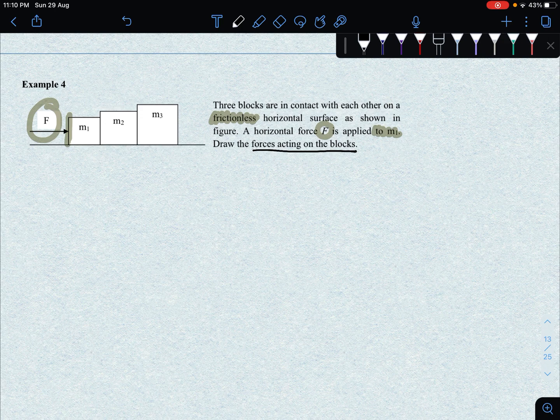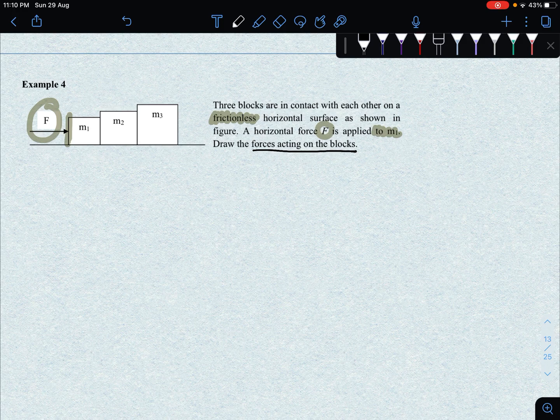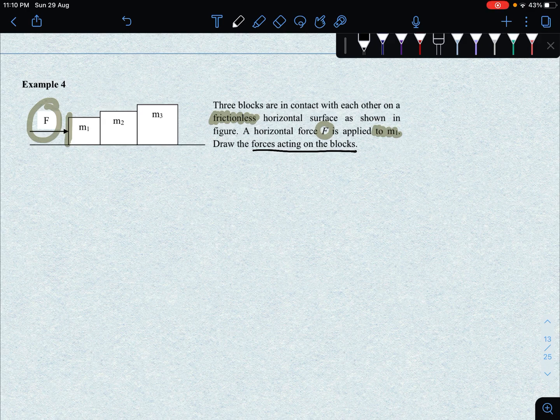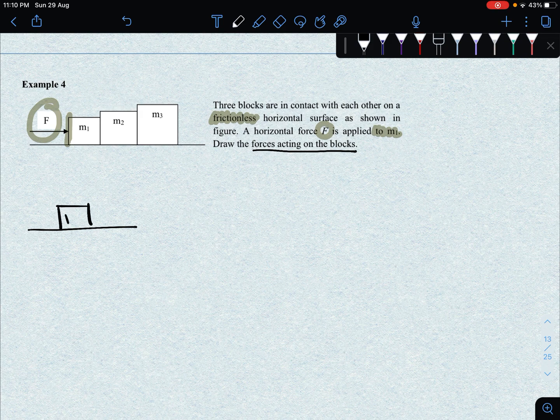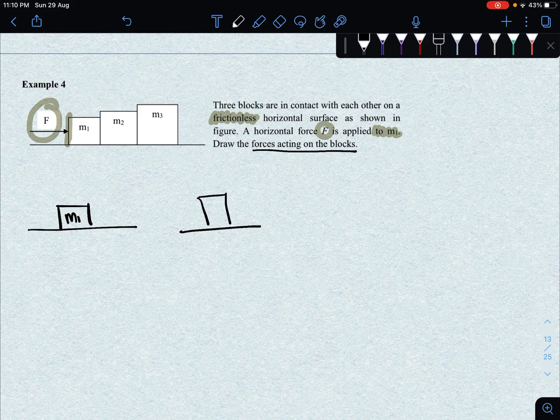Before you start drawing, identify that there are three blocks here. Therefore, you have to sketch a free body diagram for three individual blocks. Three blocks need three FBDs. So let's say we look at M1 first. This is your M1 and then we look at them separately, M2 and M3 like this.